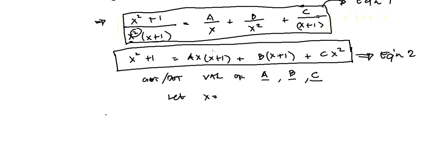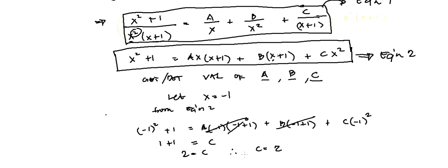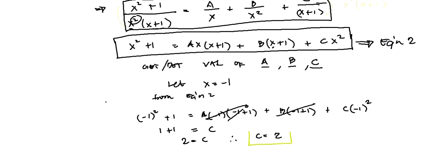We have the factor x plus 1, so if we let x equal negative 1, that term becomes 0. Substituting x equals negative 1 into Equation 2: negative 1 squared plus 1 equals A times negative 1 times 0, plus B times 0, plus C times negative 1 squared. The A and B terms vanish, leaving 2 equals C. Therefore, C equals 2.